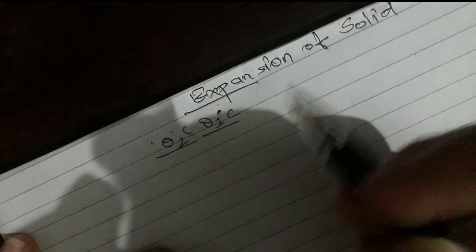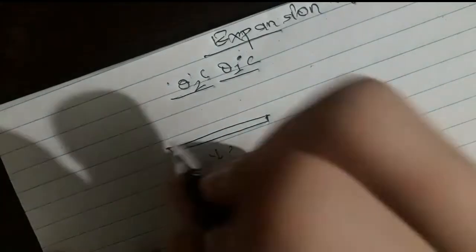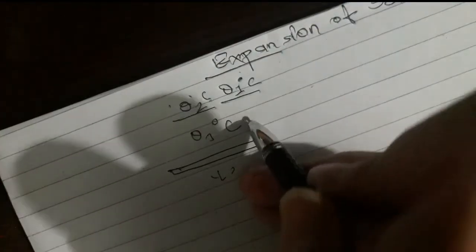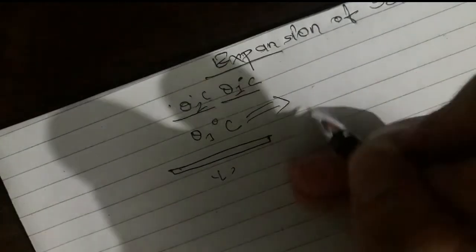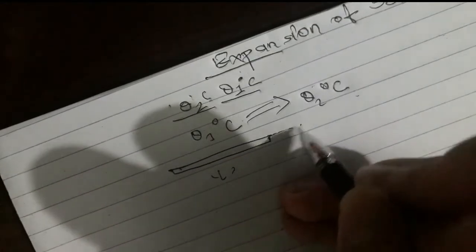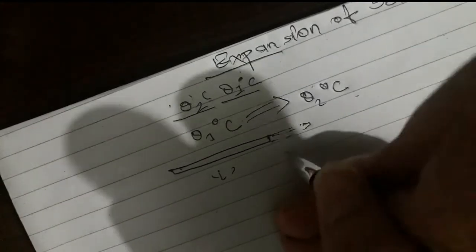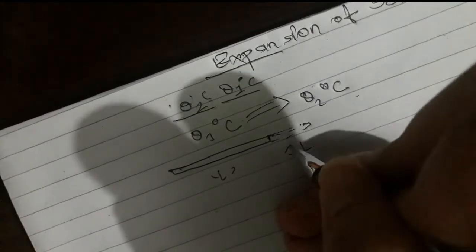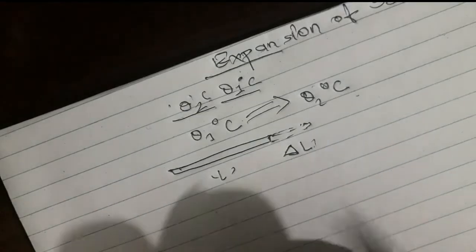Suppose you have a rod. The rod has length L at theta 1 degrees Celsius. We will increase the temperature of the rod and it will reach theta 2 degrees Celsius. When heated, the length increases by delta L, and the total new length is L-theta.